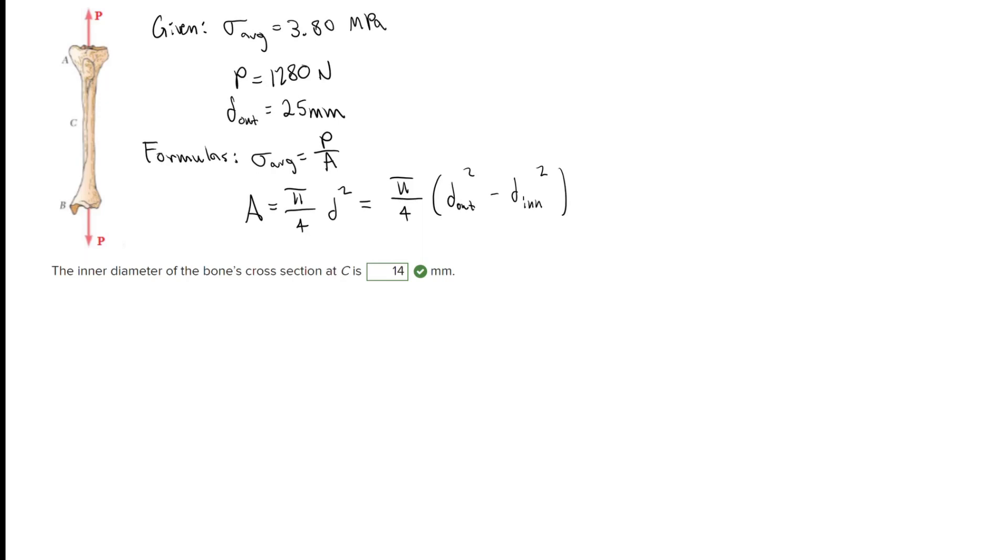Let's go ahead and start by trying to solve here for area. We're going to start with this 3.80 megapascals, which is the average stress, so we're going to be using this average stress formula from up here, set that equal to P over A. We know that our force P is 1280 newtons. Our area is pi over 4, and we know the outer diameter which is 25 millimeters, but we do not know the inner diameter.